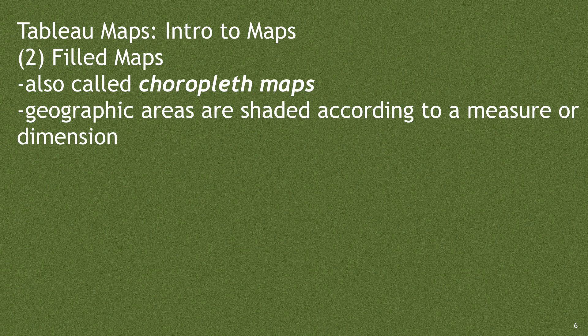Number two: field maps, also called choropleth maps. Geographic areas are shaded according to a measure or dimension, so depending on what that is, you can fill different areas of the map with more or less intense, more or less vibrant colors to help show the intensity of a specific thing.